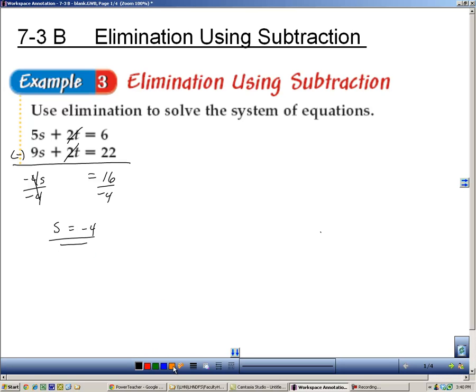Substitute that in, I like the first one, so 5 times negative 4 plus 2t equals 6. This is negative 20, so I'll add 20 to both sides, 2t equals 26, divide both sides by 2, t equals 13.